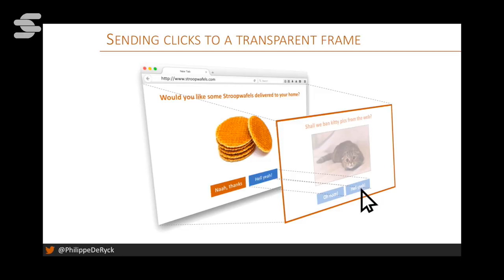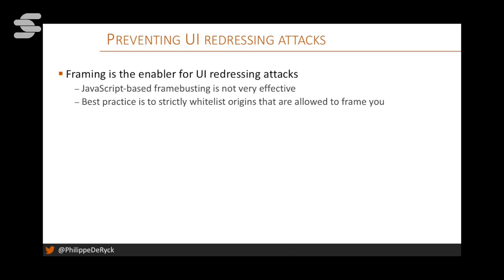There's very little you can do against clickjacking. The only effective countermeasure is restricting framing, because this attack depends on the victim page living inside a frame. By preventing or restricting framing, you can tell the browser not to frame your page unless you explicitly give approval. This used to be done with JavaScript frame-busting code, which inspected the top frame's URL and tried to break out — but researchers broke this approach repeatedly. The best practice today is to whitelist origins allowed to frame you, using origin as the key concept.